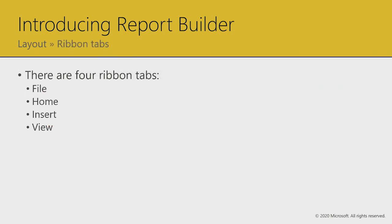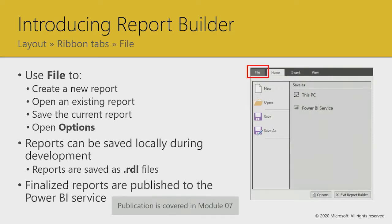There are four ribbon tabs. The File tab is used for new, open, save, and save as. When you save as, there's the ability to save to your PC or — covered later in module seven — to publish to the Power BI service. When creating and developing a report, you're developing an RDL file — Report Definition Language — the XML language that defines the entire report itself. When you save locally it's an RDL document, and when you publish it to the service it becomes a paginated report in the workspace.